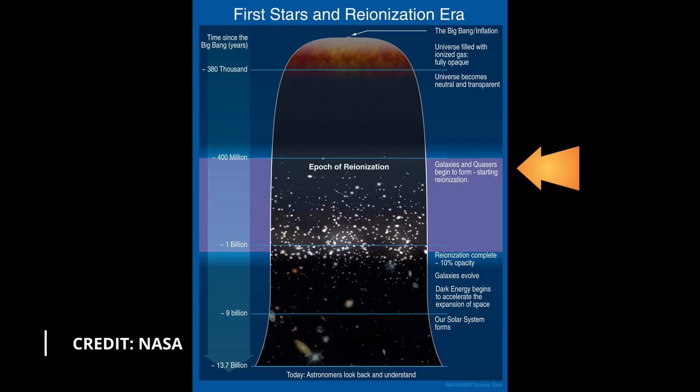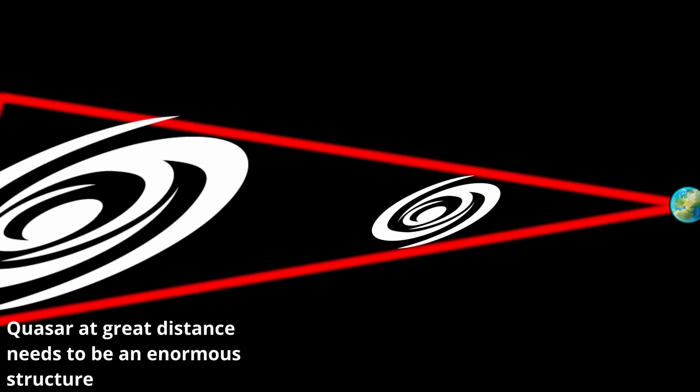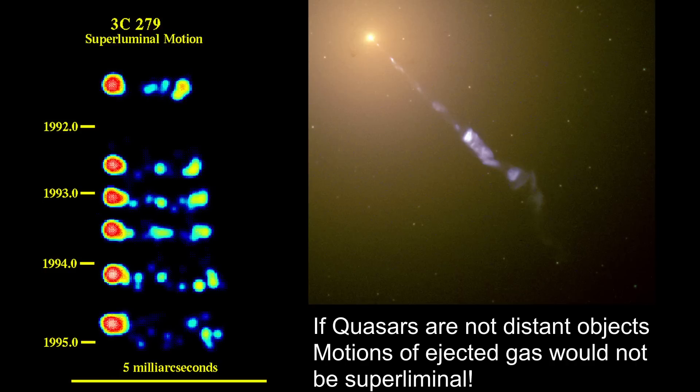The belief that quasars are incredibly old is primarily based on their redshift. However, this presents a major problem explaining their luminosity at such vast distances. To be visible at these distances, quasars would need to be about 10 to the power of 18 times more powerful than the largest galaxies. Additionally, there are issues with the relative speeds of gas being emitted. Some quasars seem to emit gas at speeds that would break the speed of light.